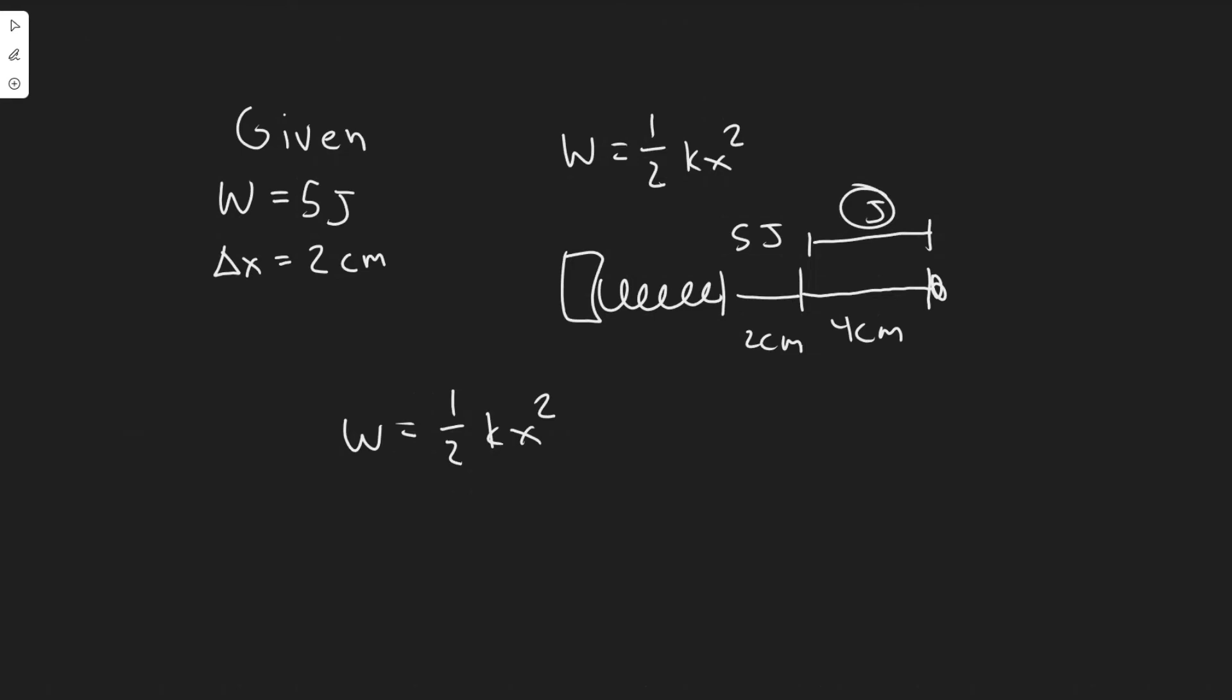And so the way we find k is by finding it in the two. So we're going to get it by using the numbers from stretching it two. Since w equals one half kx squared, we know the amount of work is five joules to stretch it two centimeters. So we can solve for the k. We're going to plug the k back in, and that's how we're going to solve it.